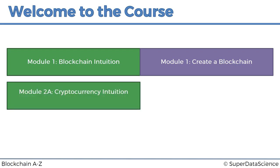Then we'll move on to Module 2, which consists of two parts in terms of the intuition. Module 2A is the Cryptocurrency Intuition, where you will find out all of the fundamentals of how cryptocurrencies work. Module 2B is the Cryptocurrency Transactions Intuition, where we will dig even deeper into how transactions work for cryptocurrencies. Basically Module 2 will be building upon what we learn in Module 1, helping us delve deeper into the application of blockchain, one of which is cryptocurrency.